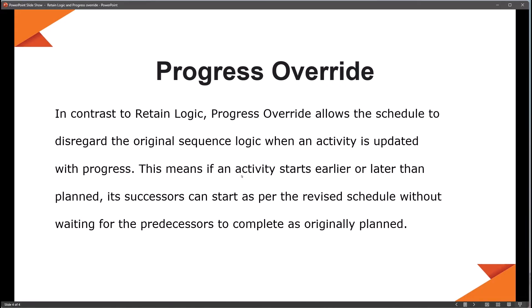On the other hand, progress override — just like the name implies — you're overriding the initial planned progress. It allows the schedule to disregard the original sequence when an activity is updated with progress. This means if an activity starts earlier or later than planned, its successors can start as part of the revised schedule without waiting for the predecessor to complete as originally planned.